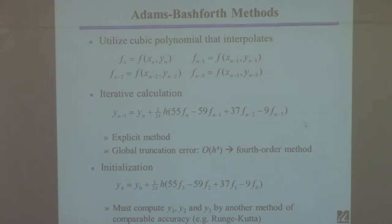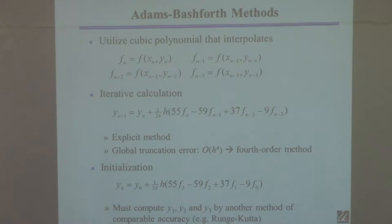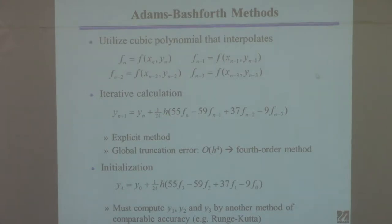So this is the definition of f_n: it's shorthand notation meaning evaluate the function at x_n and y_n. Same thing for n-1: x_{n-1}, y_{n-1}. You get a formula that looks like this. Why is this called a multi-step method? Because to get the value at y_{n+1}, I'm using values at y_n, y_{n-1}, y_{n-2}, and y_{n-3} — it uses four past values, not just the most recent one.